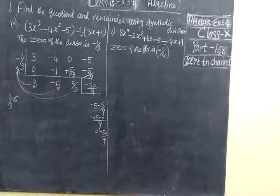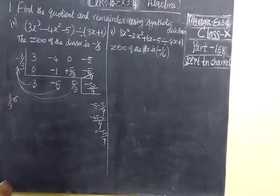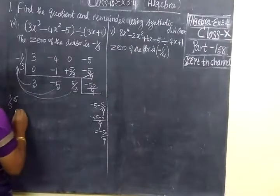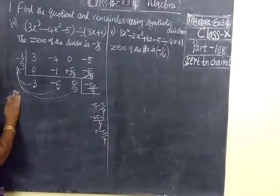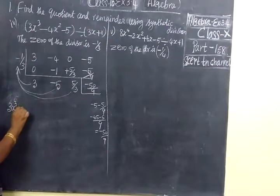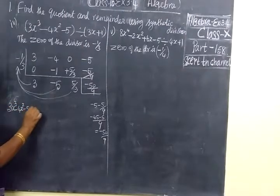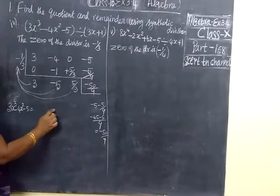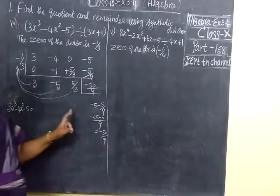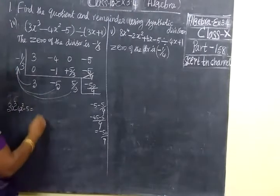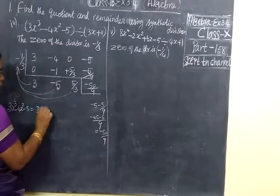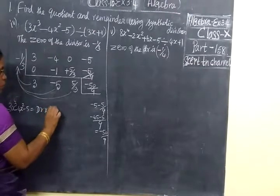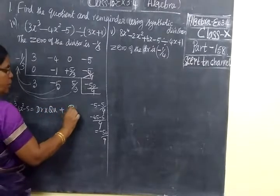Now which is the answer? Minus 50 by 9. The values are: 3, minus 5, minus 5 by 3. Here we are writing: p(x) = q(x) times divisor plus r(x), or divisor into quotient plus remainder.